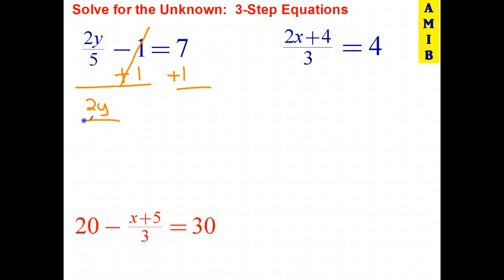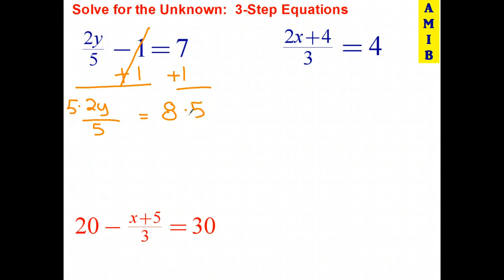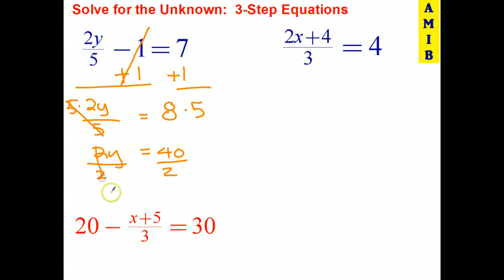That leaves just 2y over 5 equals — and 7 plus 1 is 8. Notice that we are now back to equations like we solved in the previous video: two-step equations. Every time we do a step, we get a simpler equation to solve. So here we have to either divide by 2 or times by 5. Because I like to get rid of my fractions as soon as I can, I'm going to multiply by 5. Those cancel out — 2y equals 40. Divide both sides by 2, and y equals 20.